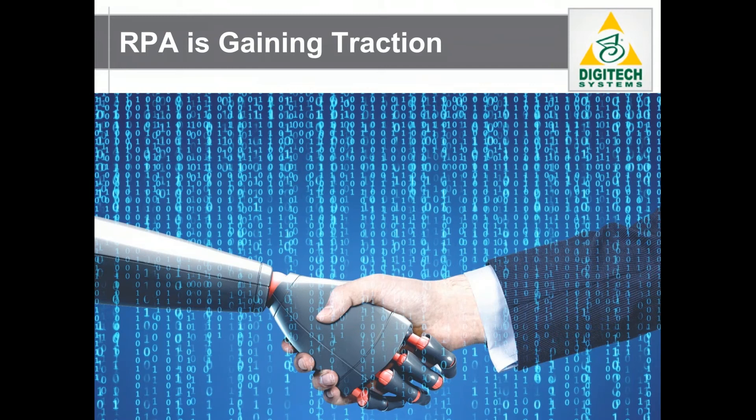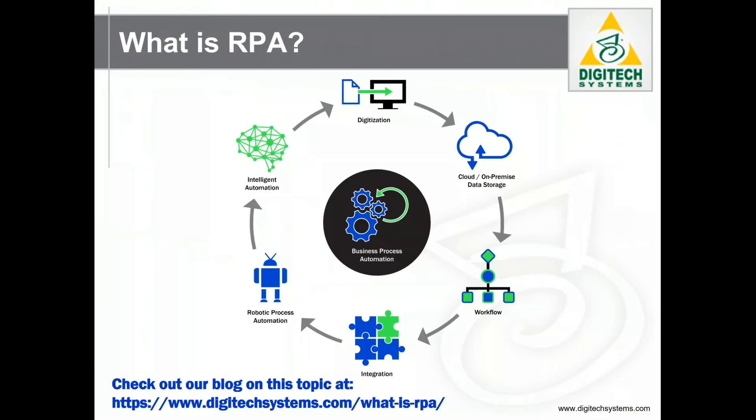Our working definition for RPA is the following: the automation of rules-based processes with structured data to facilitate sharing of information between applications. The systems are accessed by a user account controlled by a bot.